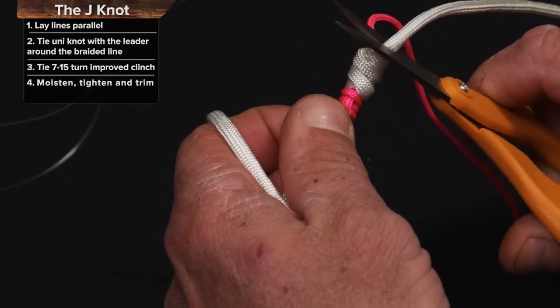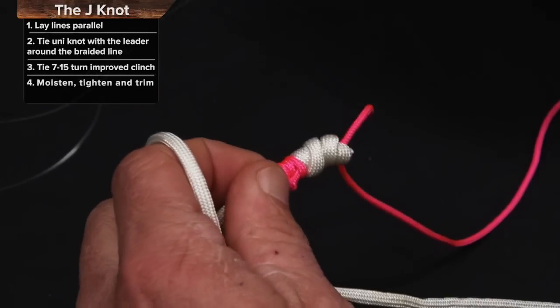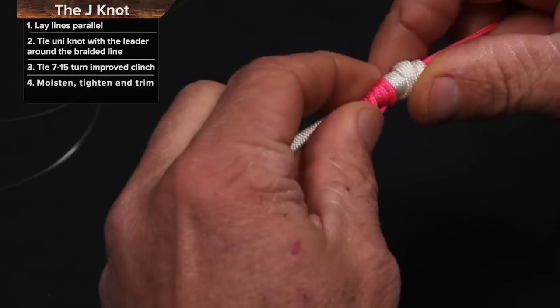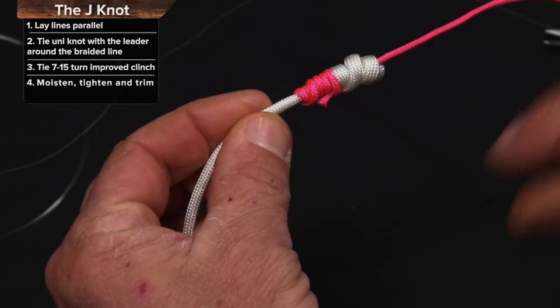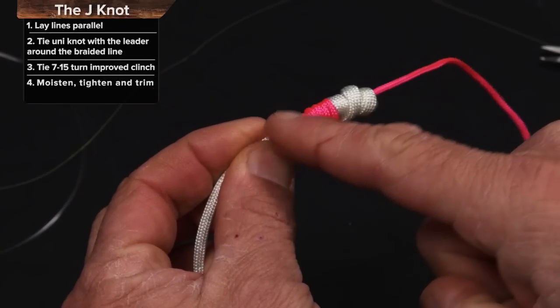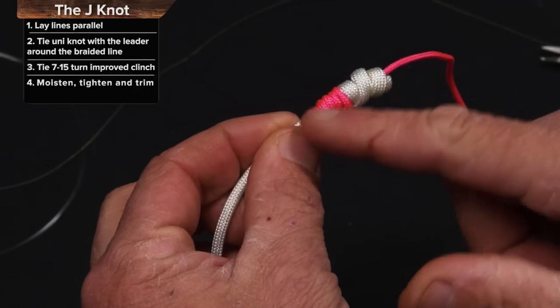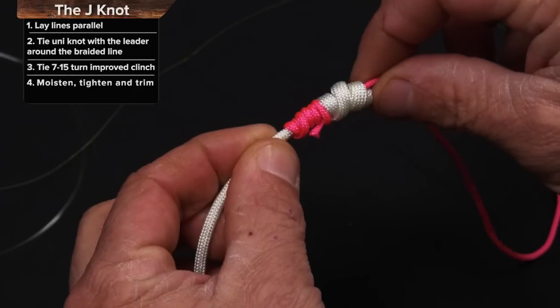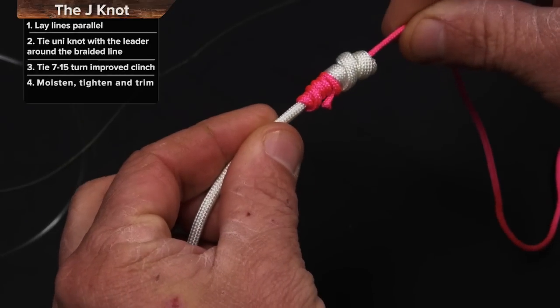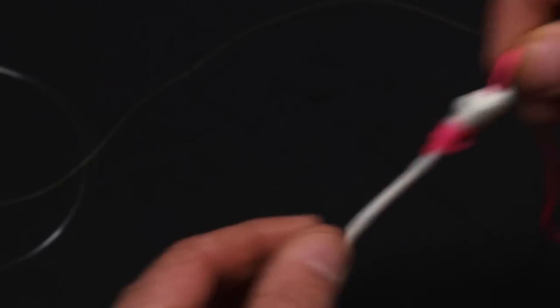This is a knot that I have a lot of confidence in. I like it because it offers kind of a ramp on this side so that the knot, if it ever does come inside and outside of the guides, it doesn't really get caught on the guides, and just generally pretty strong.